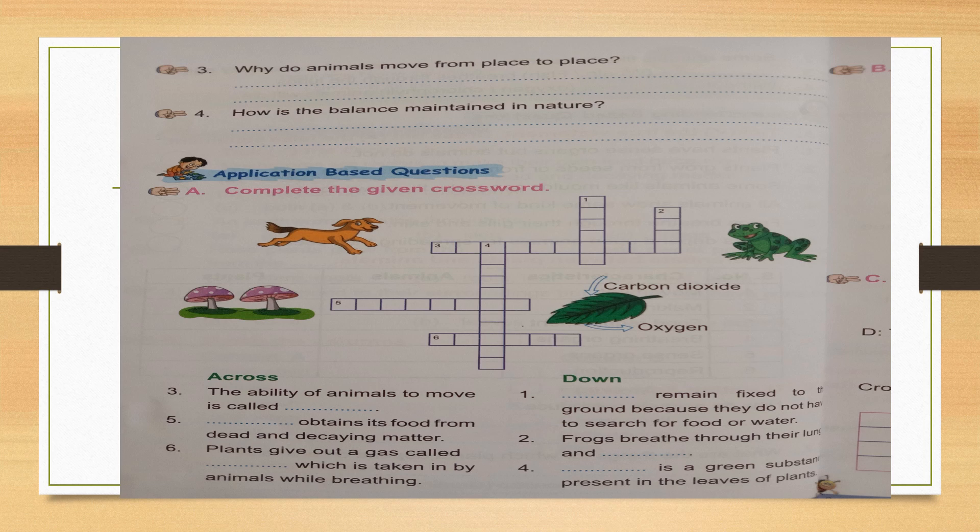Second down — near the frog: frogs breathe through their lungs and dash. Lungs and another one — you know very well. Write in 4 boxes. Fourth down clue: dash is a green substance present in the leaves of plants. That is what makes the leaves green — you know very well. Write in the boxes going down near the papaya picture.